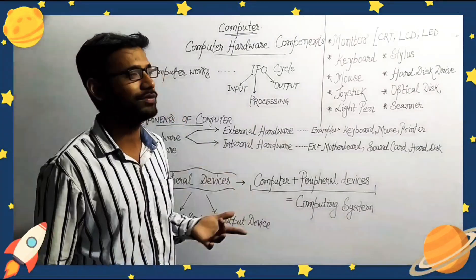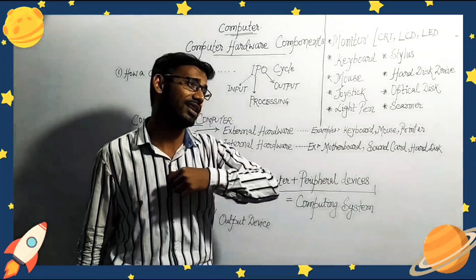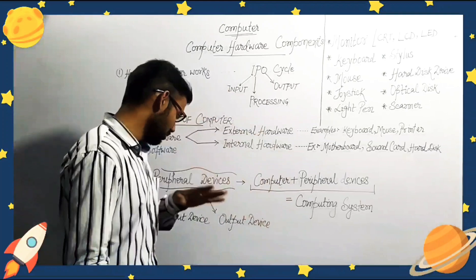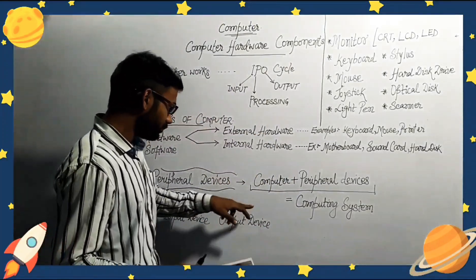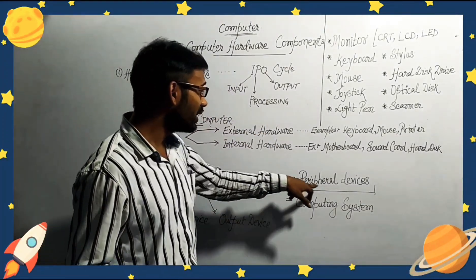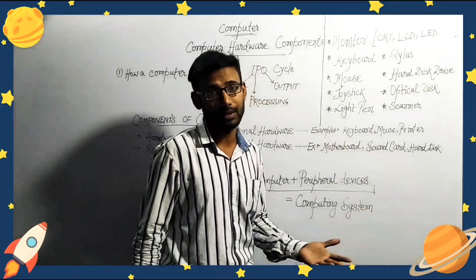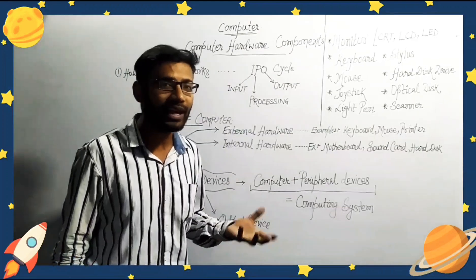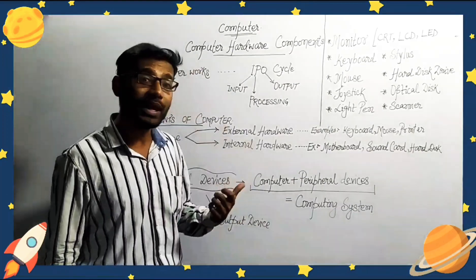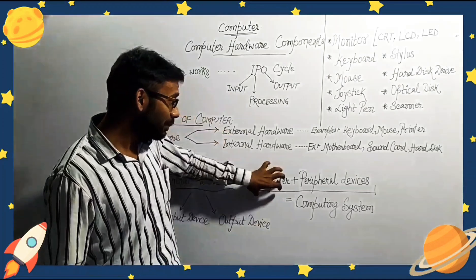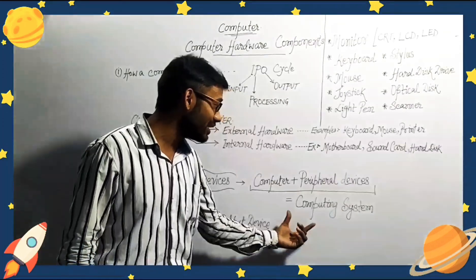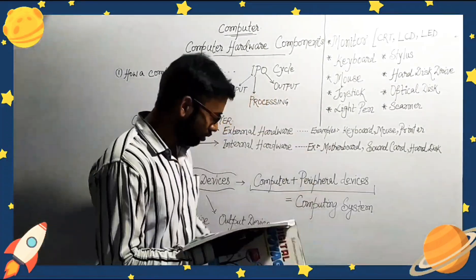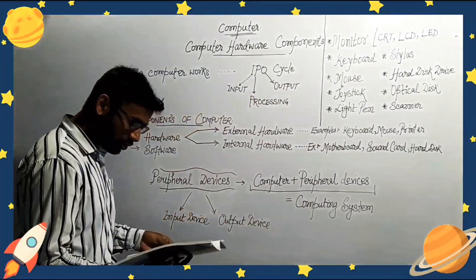There are many input devices. Output devices are also there — output devices can be a printer, monitor, LED, LCD, or TFT. So basically: computer plus peripheral device equals a computing system. A computer itself cannot work if you don't have an output device or an input device — together they form a complete computing system.